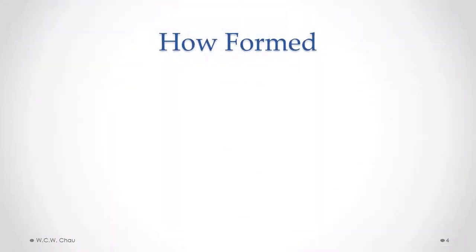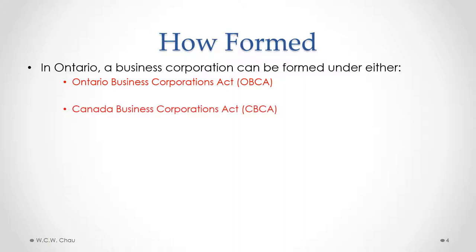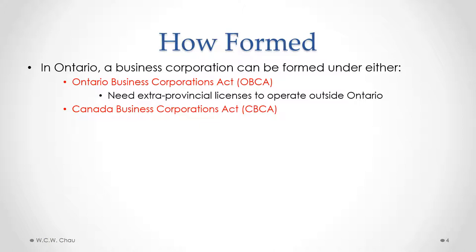How is a corporation formed? If you are in Ontario and you want to form a business corporation, you need to decide whether you want to form your corporation as a provincial corporation under the Ontario Business Corporations Act (OBCA) or form a federal corporation under the CBCA, the Canada Business Corporations Act. If you choose to form an OBCA corporation and you are operating just in Ontario, everything is fine. But if you want to operate your OBCA corporation outside of Ontario in other provinces in Canada, you are able to do that, but you need to take the extra step of obtaining extra-provincial licenses in each province that you will operate in.